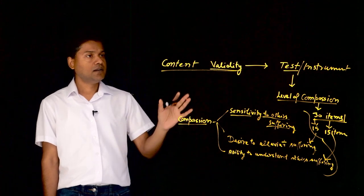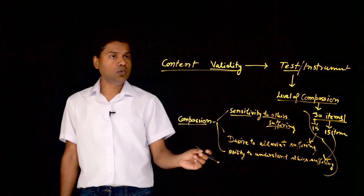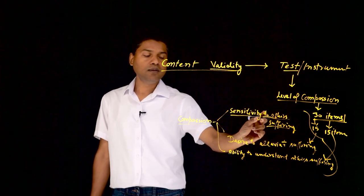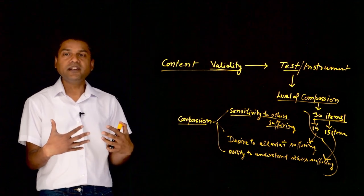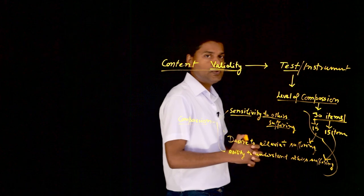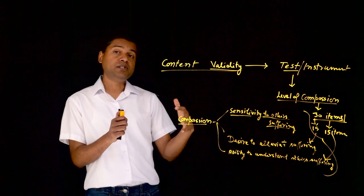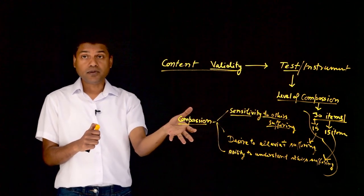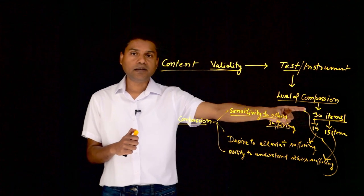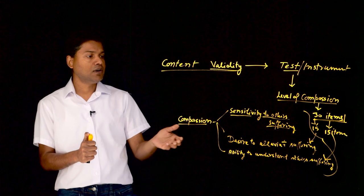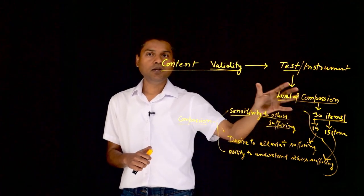So we could say that the content validity of this measurement tool is low, because it does not include items from one particular domain which represents compassion. In summary, content validity refers to the extent to which a measurement tool includes all theoretical and conceptual representations in the items that it claims to measure. This test claims to measure compassion, but it does not have items from a key component that defines compassion — so it has a low level of content validity.